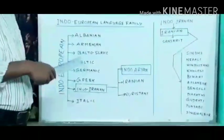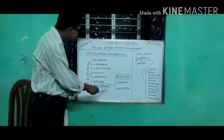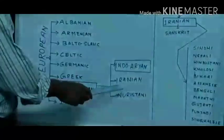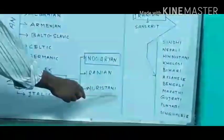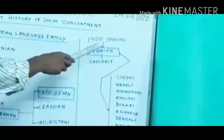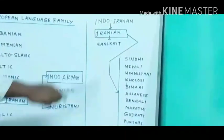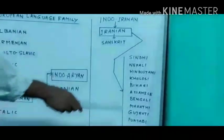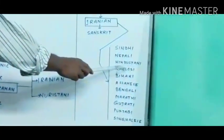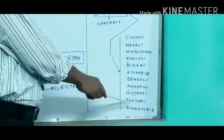The other part — follow this board — is the Indo-Iranian language. It has been divided into three divisions: one is Indo-Aryan, Iranian, and Nuristanic. The other part of this Indo-European language family: Indo-Iranian, Iranian, and Sanskrit. The Iranian family group of languages is also divided into relevant parts: Sindhi, Nepali, Hindustani, Kalushi, Bihari, Assamese, Bengali, Marathi, Gujarati, Punjabi, and Sinhalese.